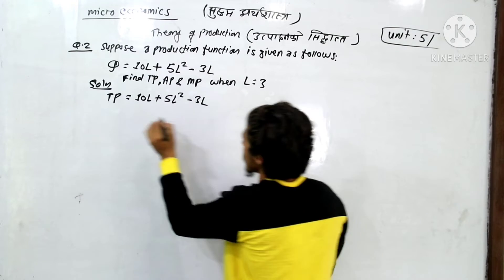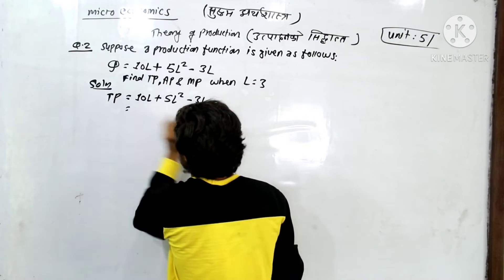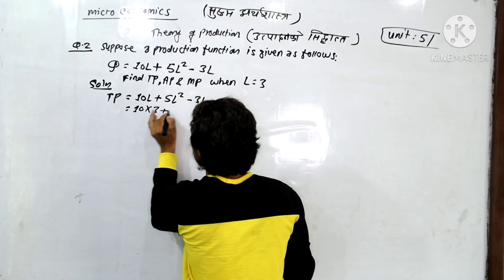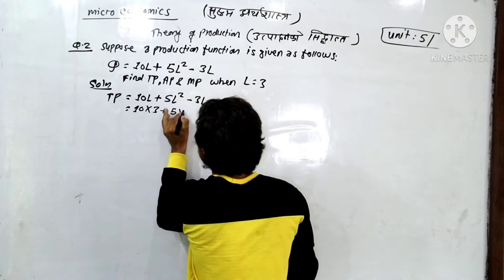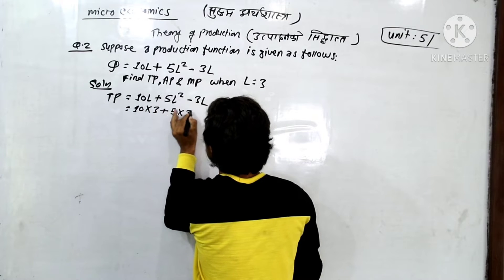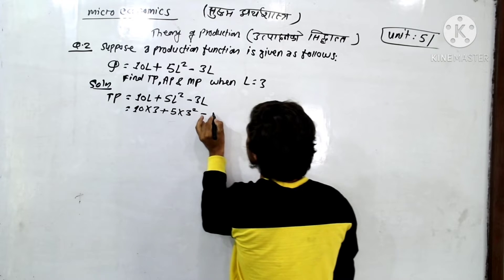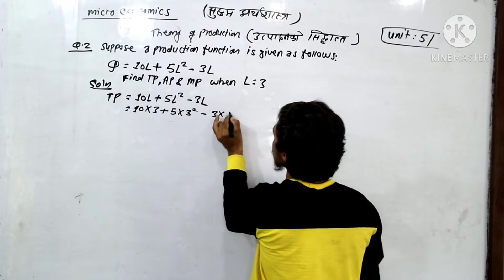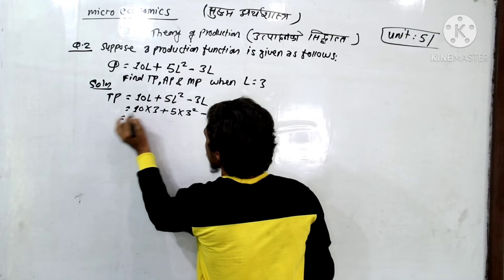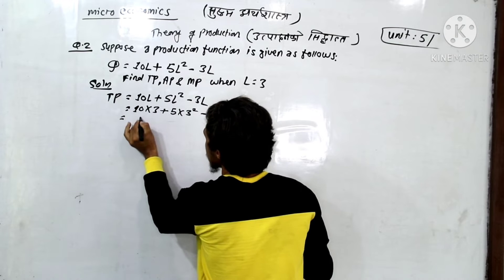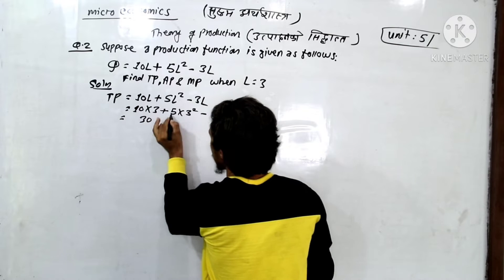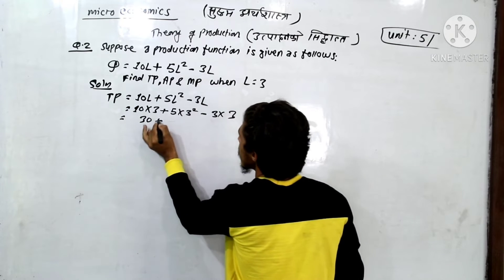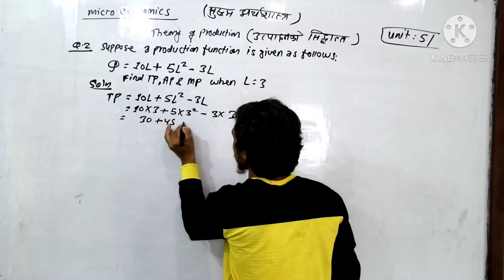When L is equal to 3: TP = 10 into 3 plus 5 into 3 squared minus 3 into 3 cubed. That is 10 into 3, plus 5 into 9, minus 3 cubed.